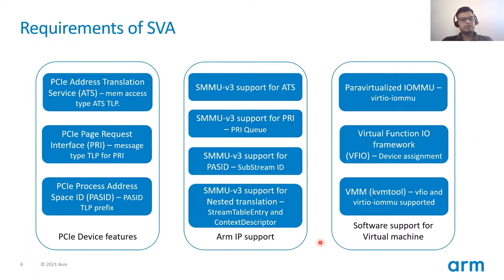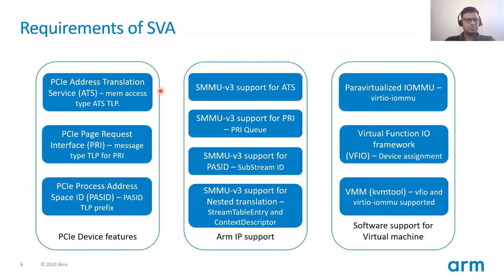Now let's look at some of the hardware and software requirements in order to realize SVA. The basic pieces present in an infrastructure platform are a PCI device supported by a PCI root complex, a translating agent such as SMMU, and the various CPUs. On the PCI side, the PCI specification defines a set of protocols: namely Address Translation Service (ATS), Page Request Interface (PRI), and Process Address Space Identifier (PASID).